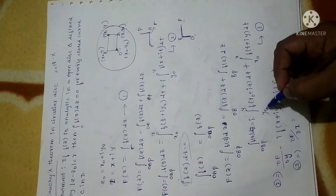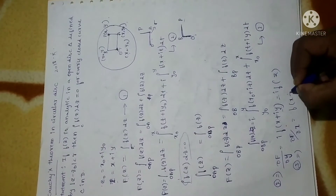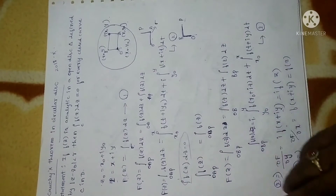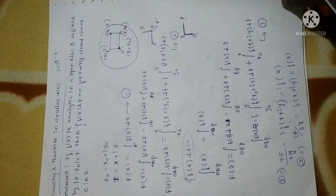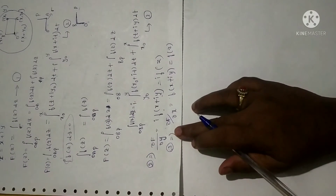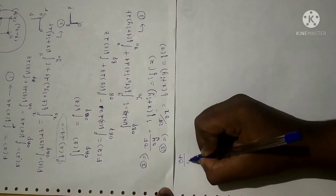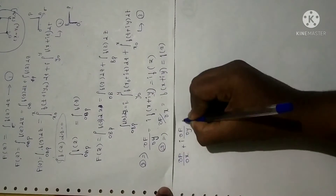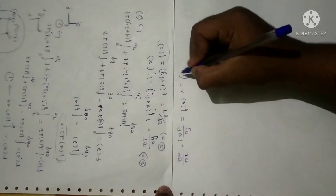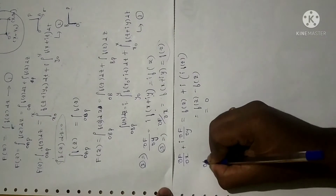From equation 3, differentiating with respect to x: the first term (integrated w.r.t. y) vanishes, leaving only the second term, giving ∂F/∂x = f(x + iy) = f(z). Now combining: ∂F/∂x + i · ∂F/∂y = f(z) + i · (i · f(z)) = f(z) + i² f(z) = f(z) − f(z) = 0.